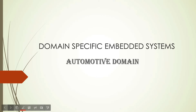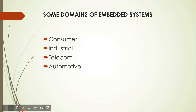First, let us understand what are the various domains in which embedded systems are used. The first is consumer electronics. You know what is consumer electronics — your refrigerator, your washing machine, your oven, your air conditioner. All these are consumer electronics, and in all these appliances you have embedded systems used.